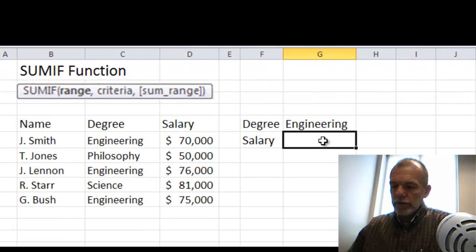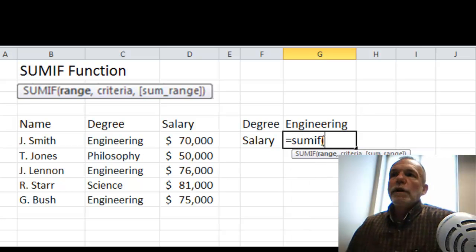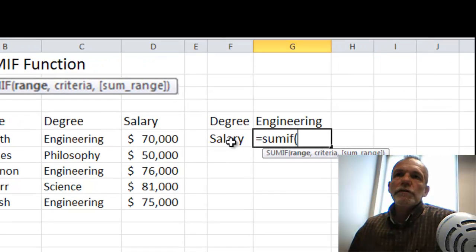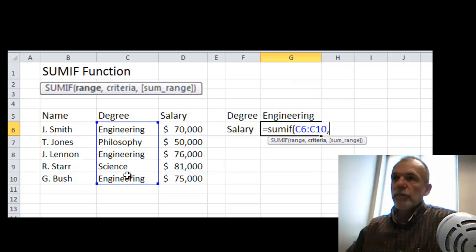So if I select this cell, that equals SUMIF, the range in which I'm going to look for the criteria match is this range here for the degree field. Then the criteria I'm looking to match is one that I've typed into this cell, the degree of engineering.